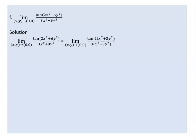This gives the same expression in numerator and denominator: x² + 3y² over x² + 3y², which simplifies directly.